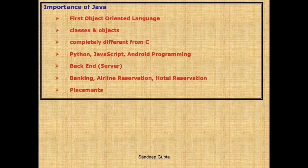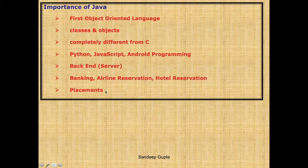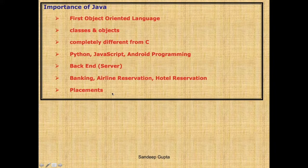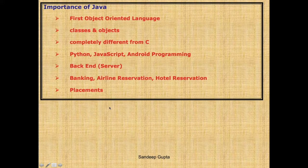Java is widely used in big softwares. Finally, another importance of Java is in placements. When you are in sem 7, companies like Accenture, Infosys, and TCS may come to your colleges. They may have a technical round in which they will ask you questions on C and Java. If you don't know these two languages properly, don't expect to get placed in these companies. Because of these reasons, Java is very important.